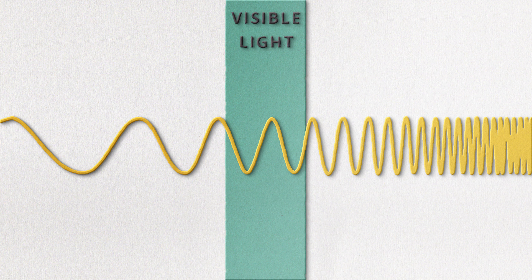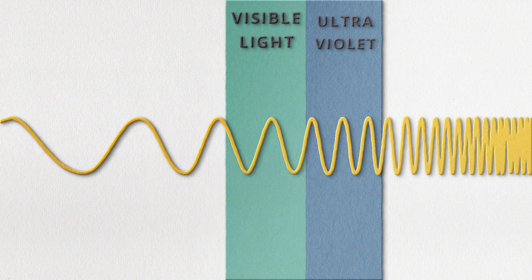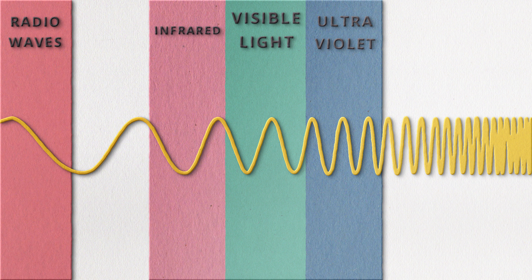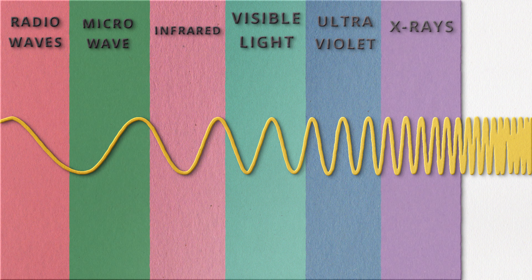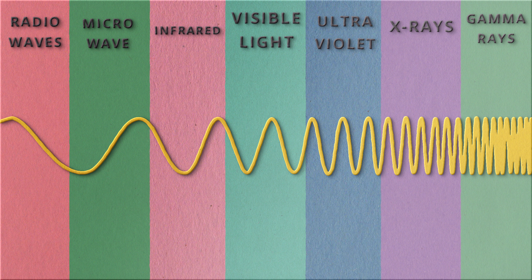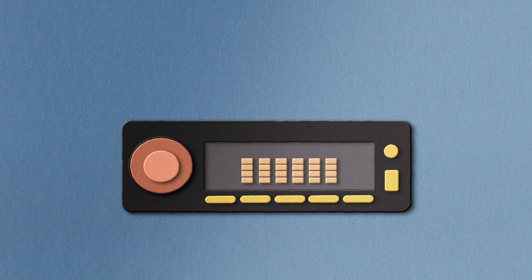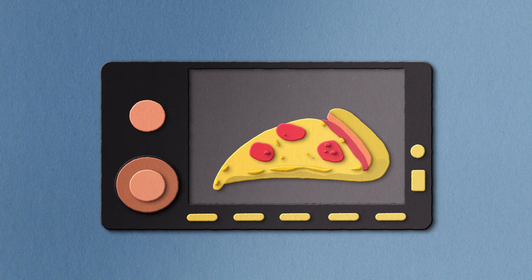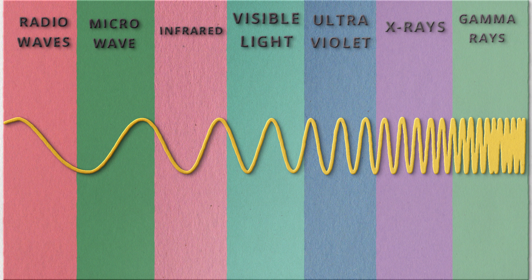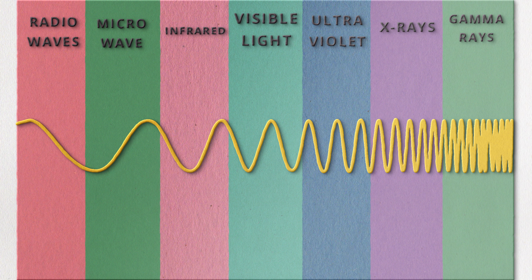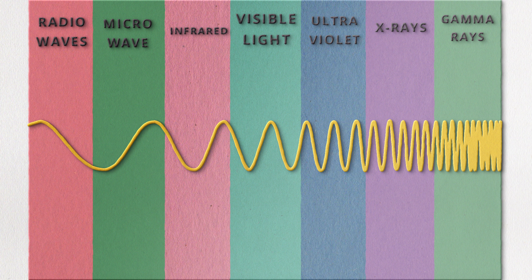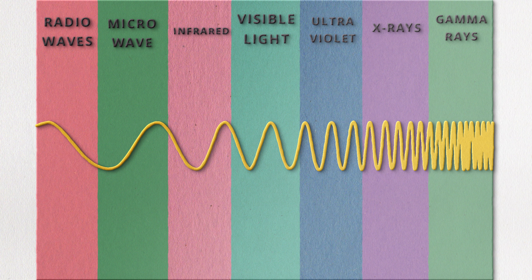However, visible light is just one part of the electromagnetic spectrum. You're probably also familiar with ultraviolet, infrared, radio waves, x-rays, microwave, and gamma rays. We use some of those in devices on a daily basis, such as the radio in our cars or when heating a meal in the microwave.